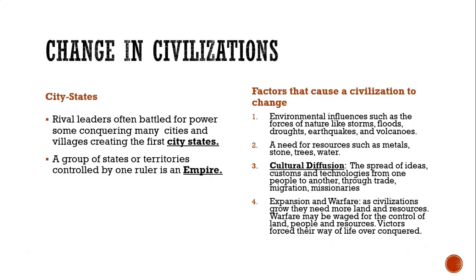There are a couple of factors that cause a civilization to change and move. Environmental influences like storms, floods, droughts, earthquakes, and volcanoes can change borders. A need for resources such as metals, stones, trees, and water. Cultural diffusion also occurs as a result of expansion and warfare. Cultural diffusion is the spread of ideas, customs, and technologies from one people to another through trade, migration, and missionaries.